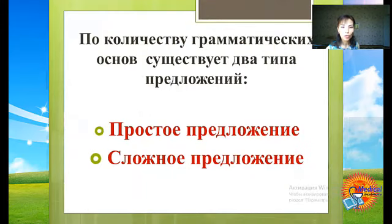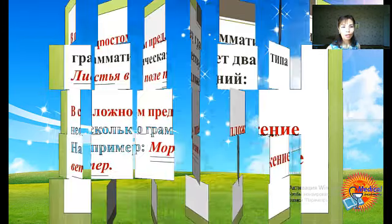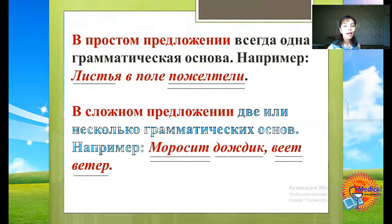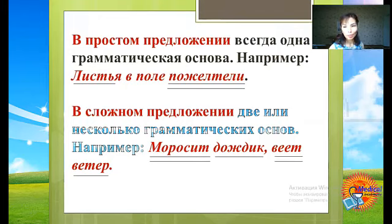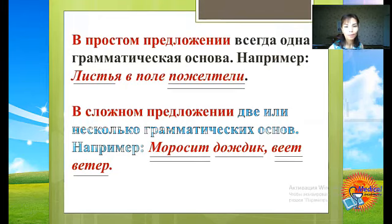По количеству грамматических основ существует два типа предложений: простое и сложное. В простом предложении всегда одна грамматическая основа. Например: «Листья в поле пожелтели». Грамматическая основа – это подлежащее и сказуемое. В данном предложении «листья» – подлежащее, «пожелтели» – сказуемое. Одно подлежащее и одно сказуемое, значит одна грамматическая основа. Это простое предложение.